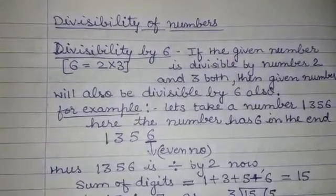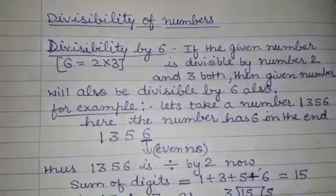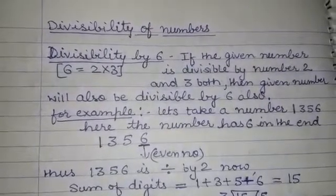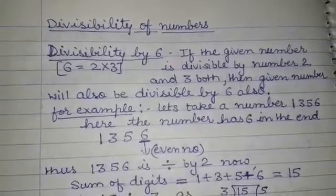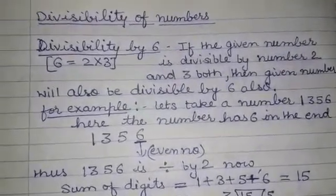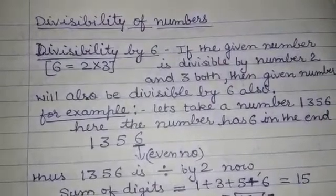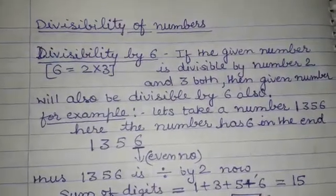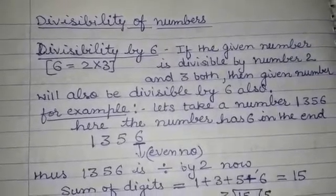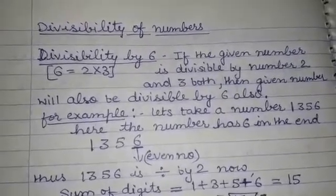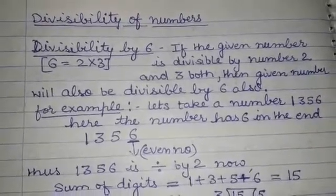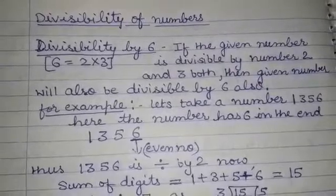First of all, divisibility by 6. If the given number must be divisible by 6, then the given number must also be divisible by 2 and 3. Because we know the factors of 6 are 2 and 3. So if we want the given number to be divisible by 6, then it must be divisible by both 2 and 3.